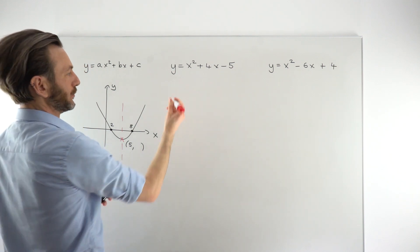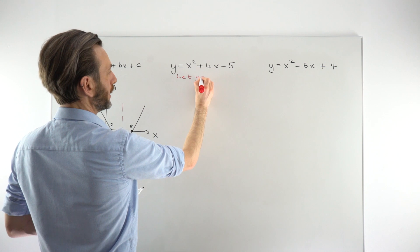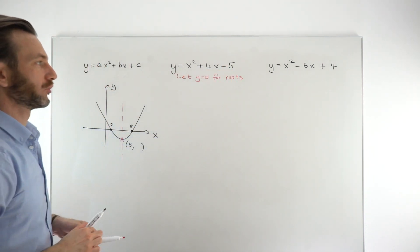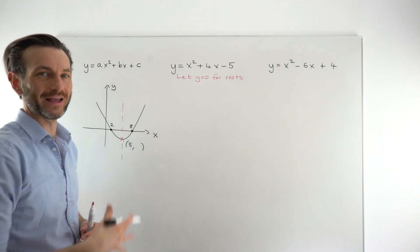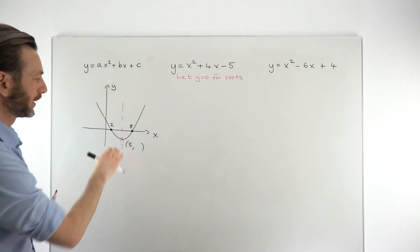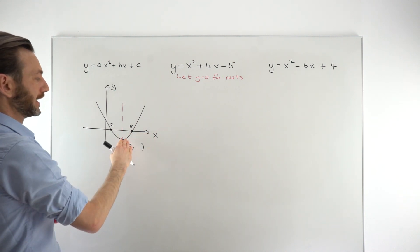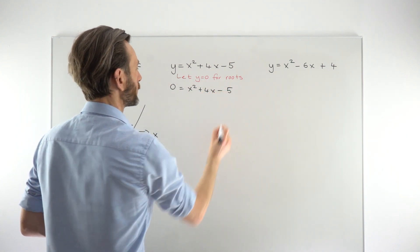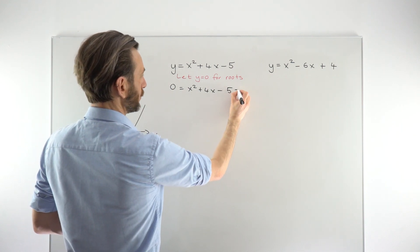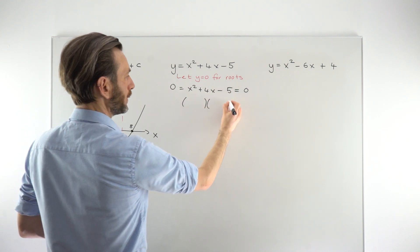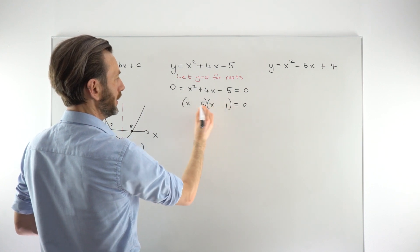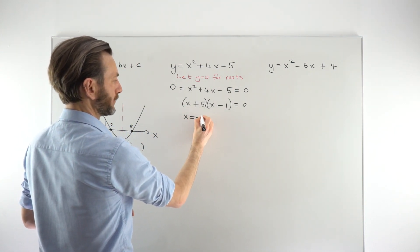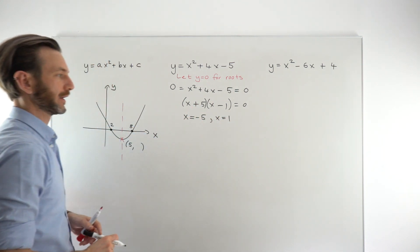So finding the roots requires us to let the y be 0. So you can put in a little note in your working. So let y equal 0 for the roots. Basically, to find the roots, we let y be 0, because along the x-axis, which is kind of where the roots are, the y value is always 0. So we're putting a 0 in here for y, and that gives us a quadratic equation to solve to then get the roots. Factorizing that one as a trinomial, we would get an x and an x and a 5 and a 1 and a plus and a minus. That allows us to then split these off into two little mini equations, and we would end up getting x equals minus 5 from the first bracket, and x equals positive 1 from the second bracket. So these are our two roots.